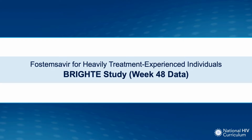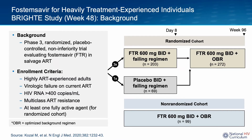Now let's examine some key clinical trial data which led to approval of Fostemsevir. This study, called BRIGHTE, examined the virologic efficacy of Fostemsevir as part of combination therapy for heavily treatment-experienced adults with HIV. You can see the enrollment criteria on the left. The trial had a relatively complex design that included both a randomized cohort and a non-randomized cohort. There was an effort to only include individuals in the randomized cohort if they had at least one fully active ARV agent that could be included in the optimized background regimen added to Fostemsevir therapy.